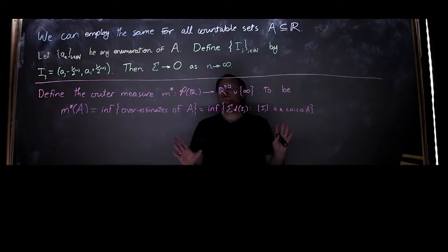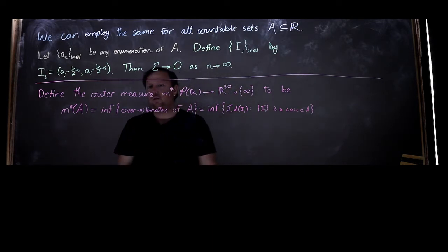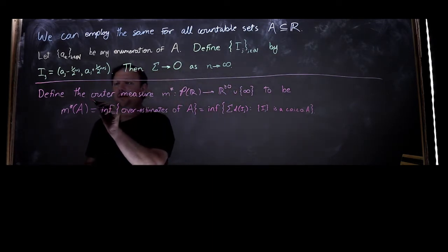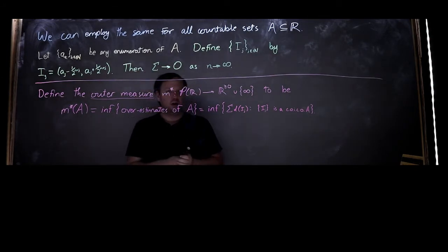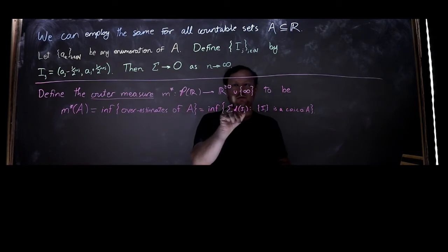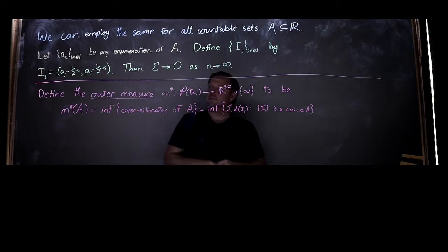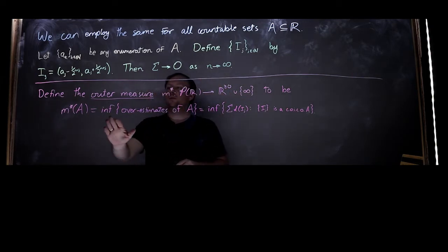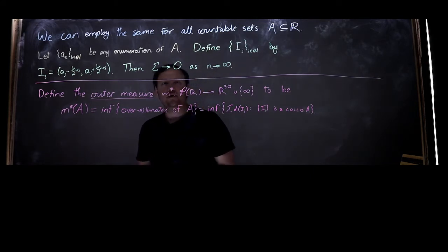Hopefully these considerations and examples motivate this definition that we will call the outer measure. M* is going to be known as the outer measure. It is a function from the power set of the reals into the non-negative extended real numbers, and it will be the infimum over all the overestimates of A.